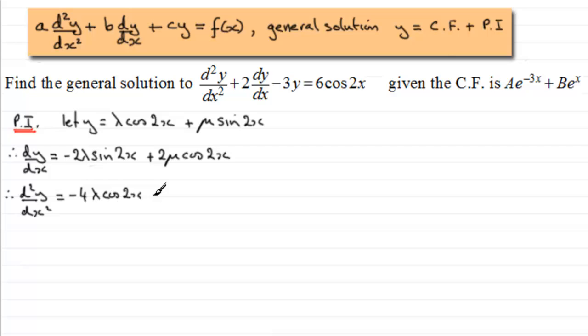And then if we differentiate this term here, we're going to get minus 4 mu sin2x.